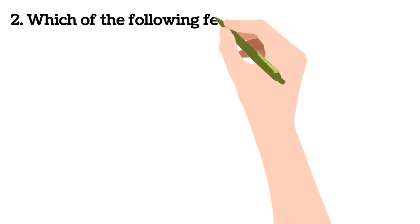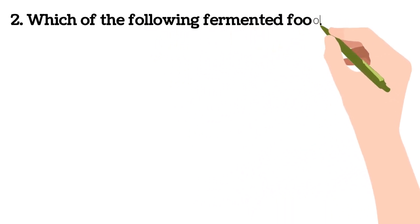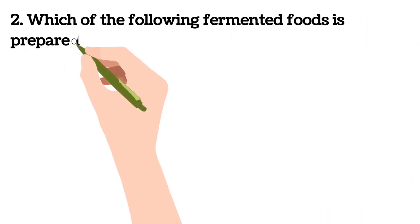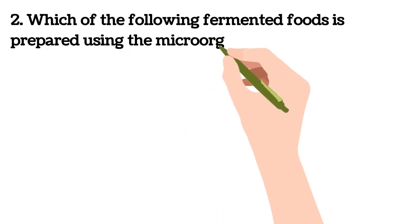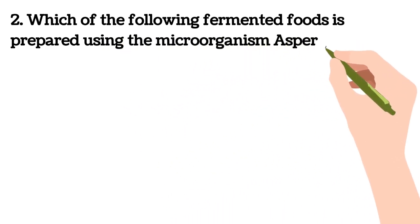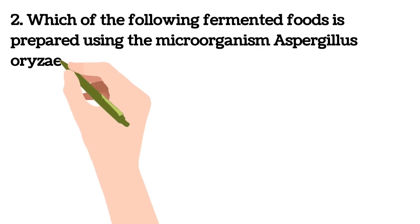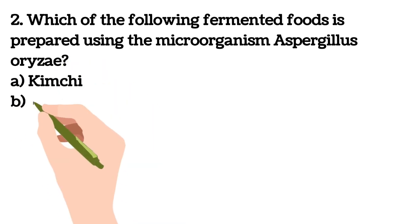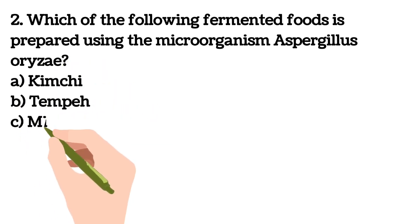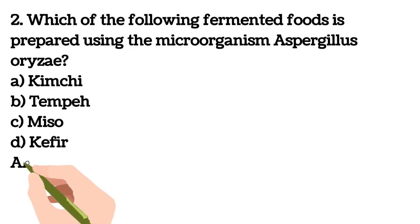Second question: which of the following fermented foods is prepared using the microorganism Aspergillus oryzae? A) Kimchi, B) Tempeh, C) Miso, D) Kefir.